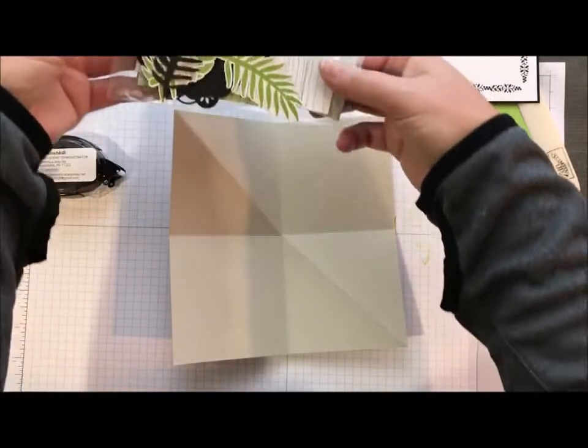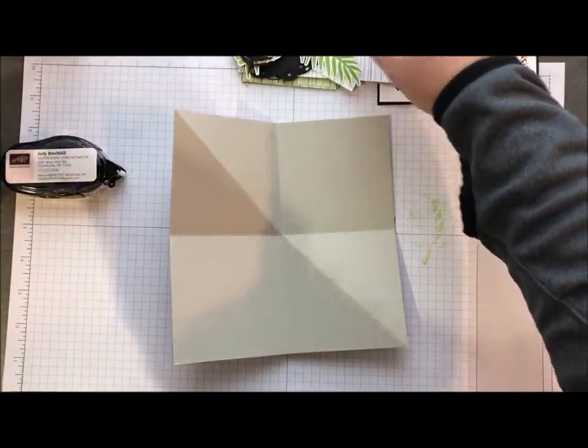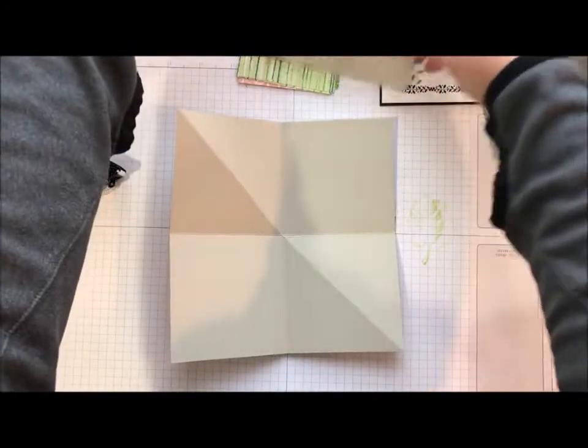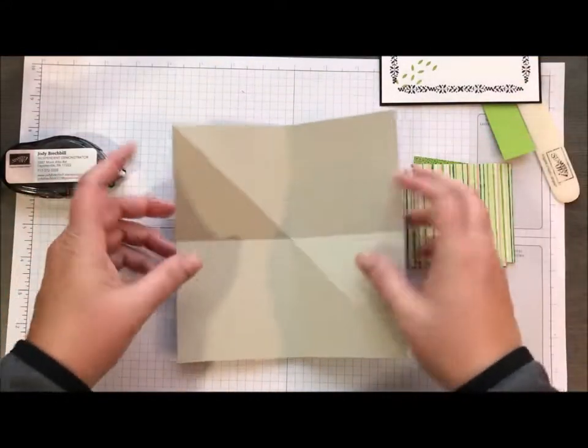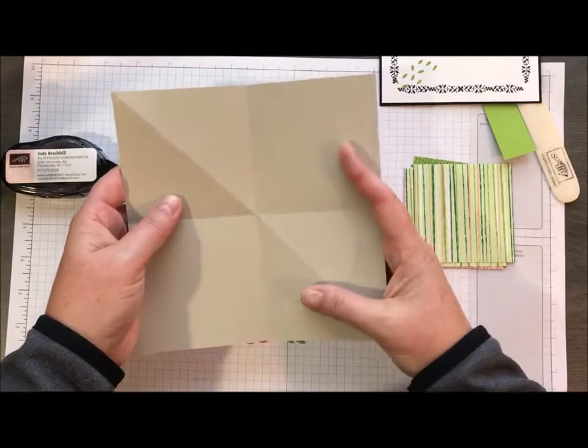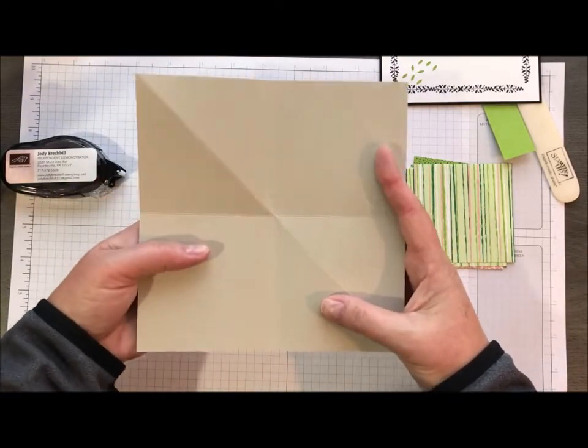Then we're going to go ahead and use this piece and mount our designer series paper on. So what I did, this was for my class. These are all the little parts. I went ahead and had them already pre-cut and ready to go. So here's our designer series paper. Let me take a step back. Let's go ahead and show you how to fold this piece.